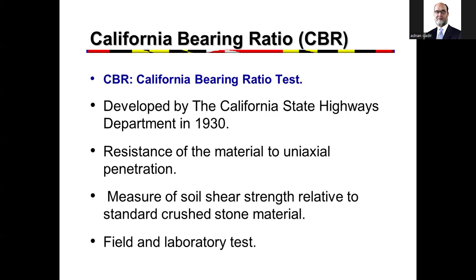When we talk about CBR, the material is subjected to a uniaxial load — a one-dimensional load from the top, applied along the Z-axis. We measure how much load a given penetration will carry. If the penetration is more, the soil is weak; if penetration is less, the soil is strong. We test our soil for a given load and compare it against the standard crushed rock material.